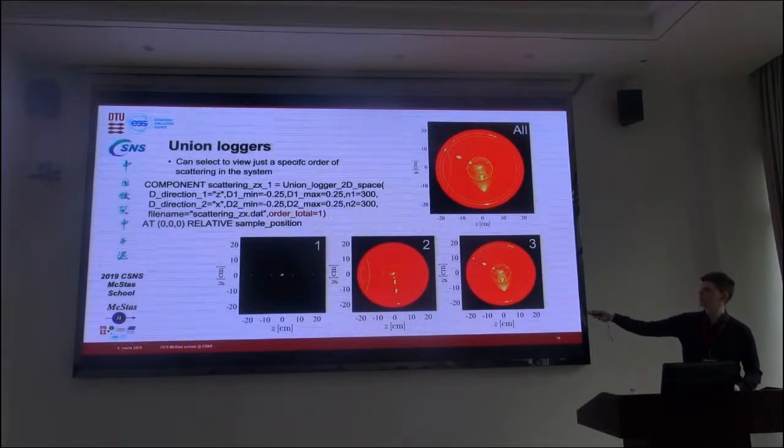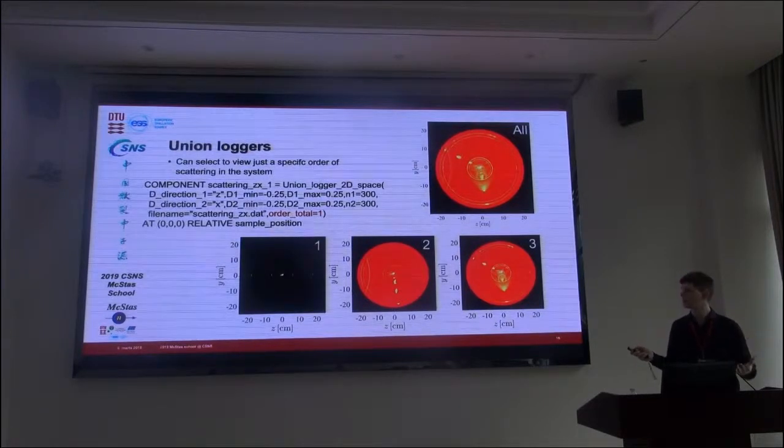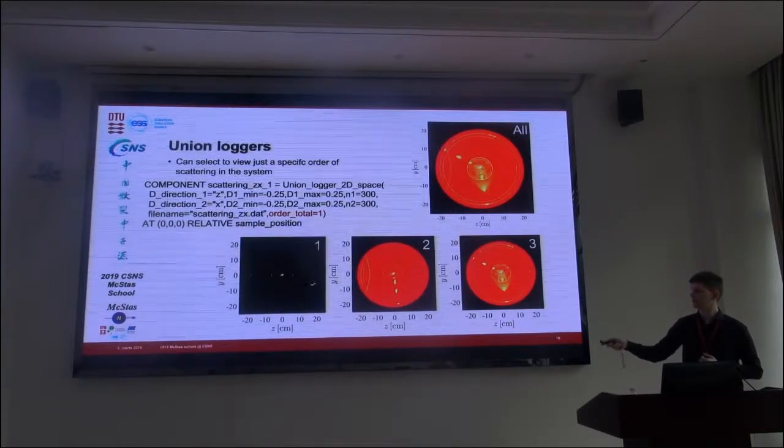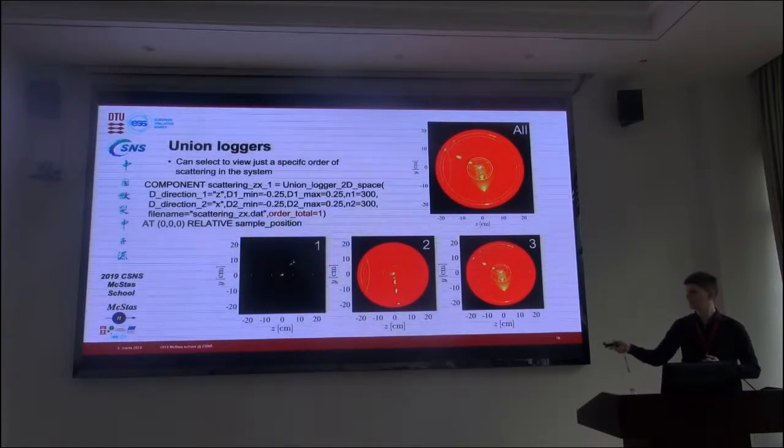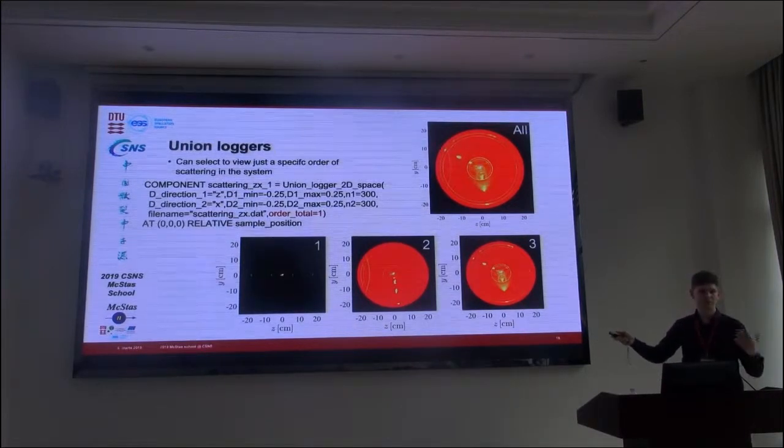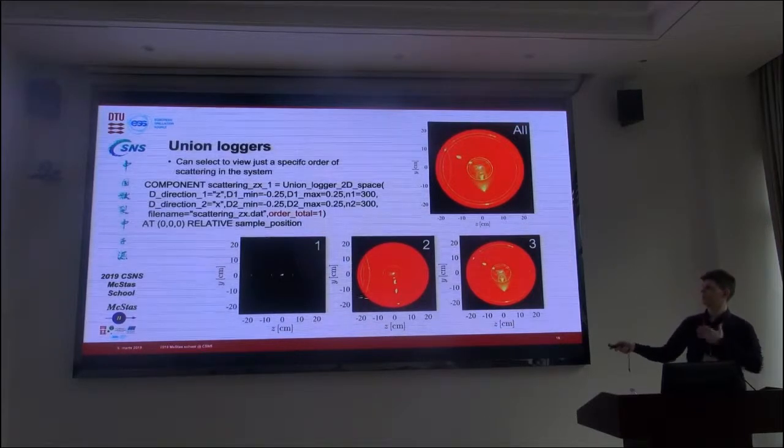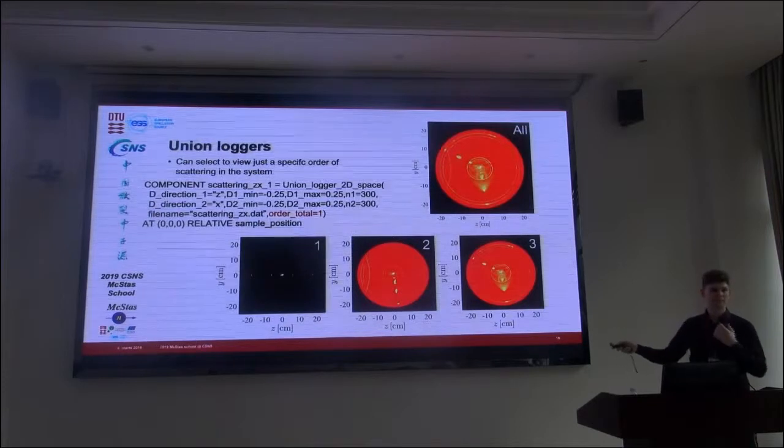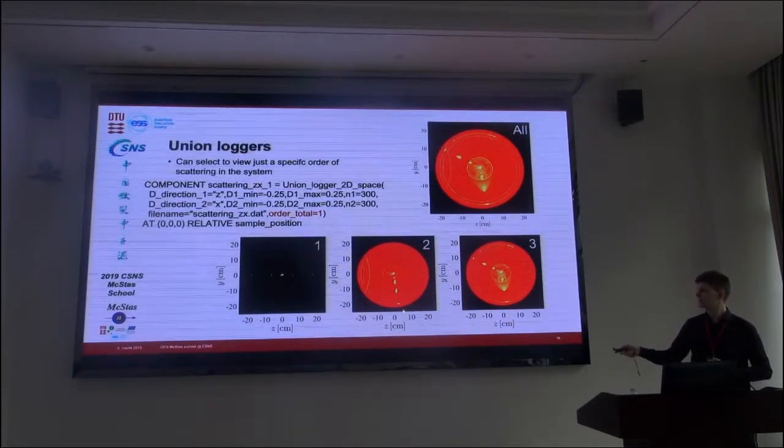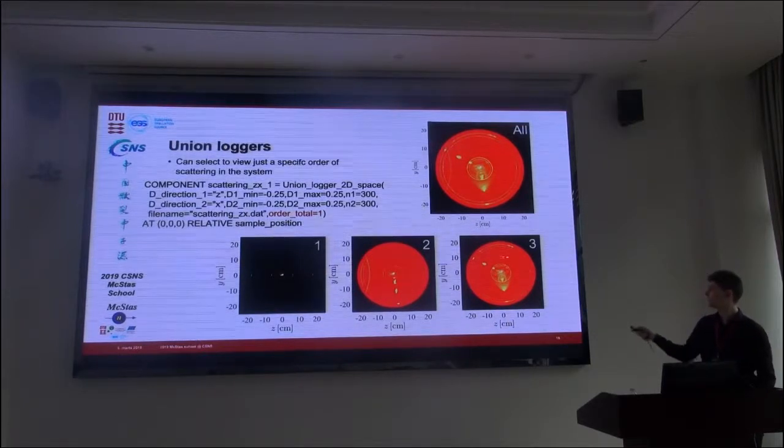And let's look at that split into the different scattering orders. And you can do that by saying, I want the order of this monitor or this logger to be, for example, one. Then we get the first order scattering. And that can only happen in the sample. If you had a number two here, we would look at the second order. And we get some of the powder rings from the cryostat. And then some of the Bragg peaks from the single crystal sample. And in the third order, we get a bit of both.